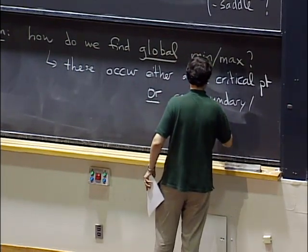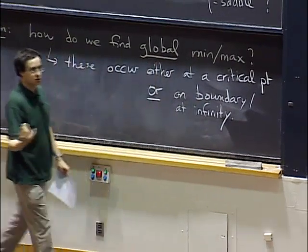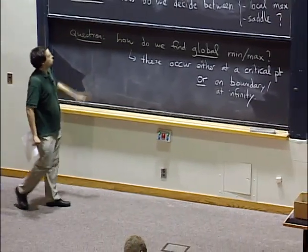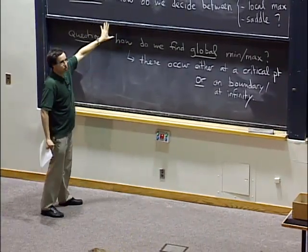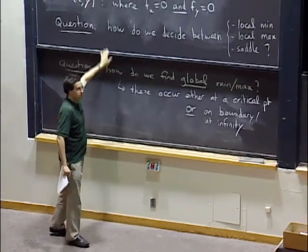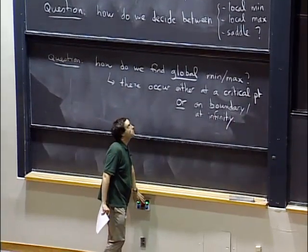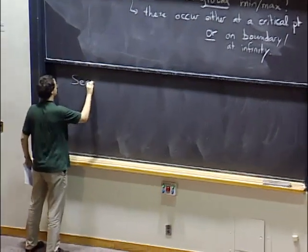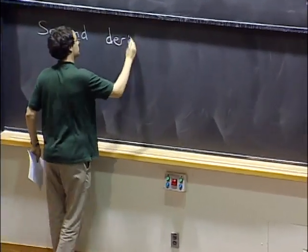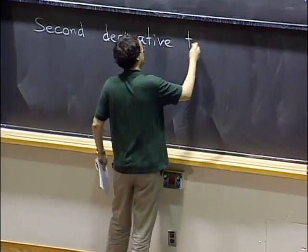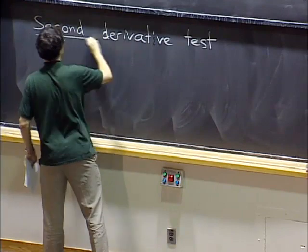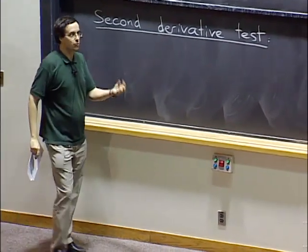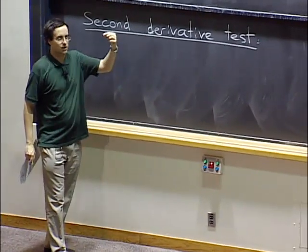By that I mean on the boundary of a domain of definition that we are considering, so we have to try both. We have to actually check the boundary and the behavior at infinity of our function to know where the minimum and maximum will be. For now, let's focus on the question of what type of critical point we have. We'll use something known as the second derivative test.